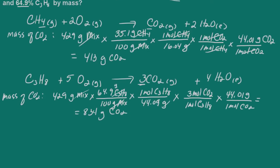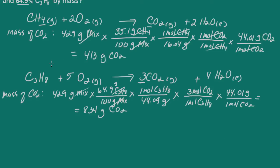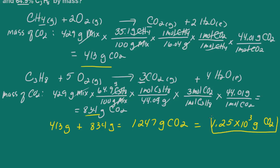So now all we need to do is combine the two. So from the first part, we got 413 grams. And here 834 grams. And that's going to give us 1,247 grams of carbon dioxide. But we are limited to three significant figures here. So let's put this into scientific notation. And that's 1.25 times 10 to the third grams of carbon dioxide.